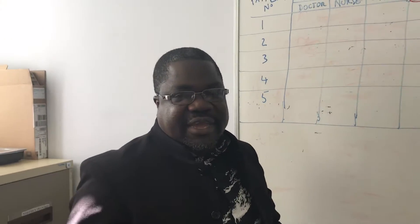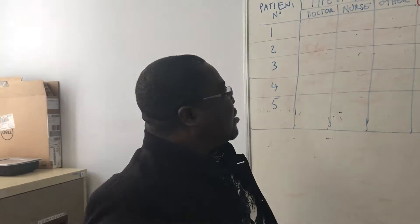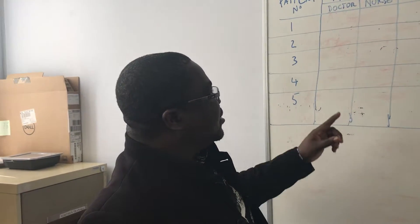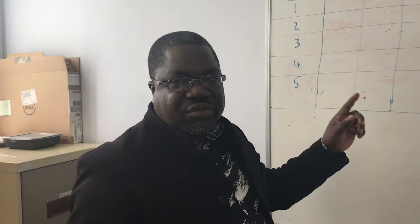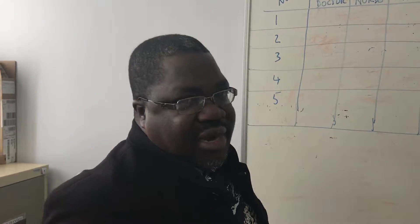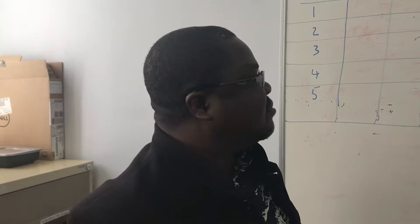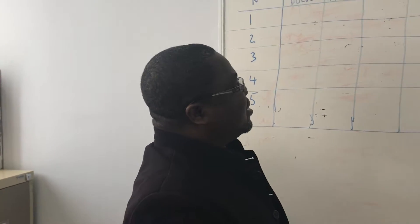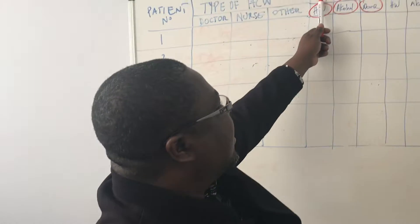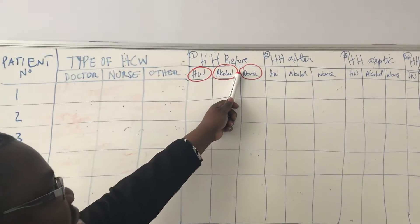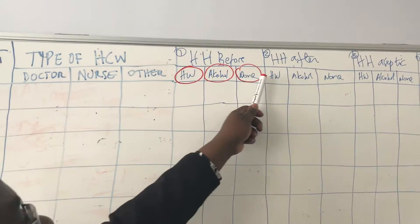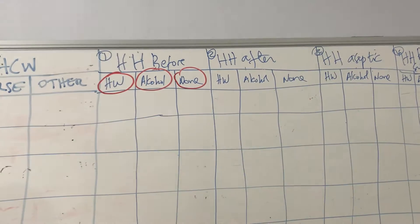Now in this second part of the presentation, I am going to illustrate to you how you can calculate the hand hygiene adherence rate. Let's assume that you decided to monitor two indications only, not five. Let's say you decided to monitor hand hygiene before patient contact and hand hygiene after patient contact.